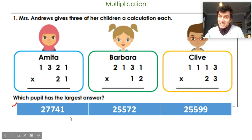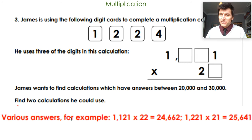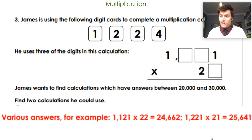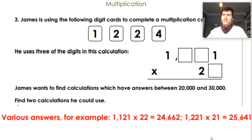Okay, let's see a couple of suggested answers. You could have one thousand one hundred and twenty-one multiplied by twenty-two, which gives a product of twenty-four thousand six hundred and sixty-two. Or at the bottom, one thousand two hundred and twenty-one multiplied by twenty-one, where the product would be twenty-five thousand six hundred and forty-one. So there are different options — hopefully you were able to find some where the product was less than thirty thousand but greater than twenty thousand.